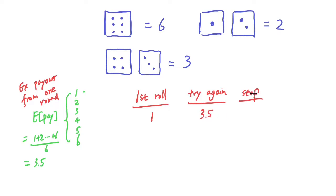And if you stop here, you're only just going to get one. So obviously, you would want the 3.5. Similarly, if on your first row, you got a two and you try again, you're going to get 3.5 again. And if you stop, you're going to get a two. For three, 3.5 and three.